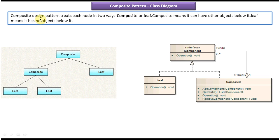Composite design pattern treats each node in two ways: composite or leaf. The node can be a composite or a leaf. Composite means it can have other objects below it — under a composite there can be another composite, or one or more leaf nodes. Leaf means it has no objects below it; it is the final node in the tree structure.